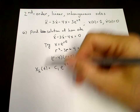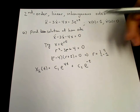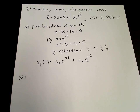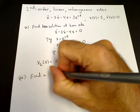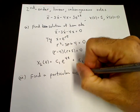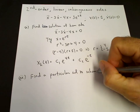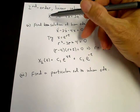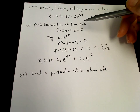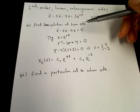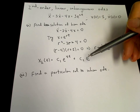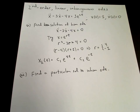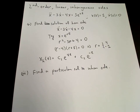When we substitute x_h into the left-hand side, we will get 0. The second part of the solution method is to find a particular solution to the inhomogeneous ODE. A particular solution is any solution that satisfies the differential equation. We can then add the homogeneous solution to the particular solution, and that general solution will satisfy the differential equation. That will be Step 3, so Step 2 is to find the particular solution.